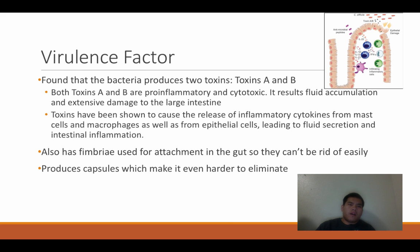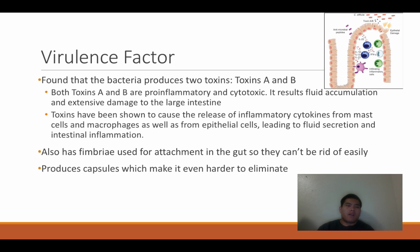The virulence factors are the reason the bacterium is able to cause infection. It releases two toxins known as Toxin A and Toxin B. Both are pro-inflammatory and cytotoxic, resulting in fluid accumulation and extensive damage to the large intestine. They release inflammatory cytokines from mast cells, macrophages, and epithelial cells, leading to fluid secretion and intestinal inflammation causing diarrhea. Fimbriae are used for attachment in the gut, and capsules make the bacteria even harder to eliminate.